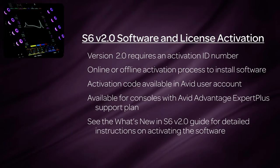Starting with version 2.0, S6 updates will require an activation ID number in either an offline or online activation process to install the software. The activation code will be available in the user's Avid account if the console has a current Avid Advantage Expert Plus support plan. Please see the What's New in S6 version 2.0 document for detailed instructions on how to activate the software.